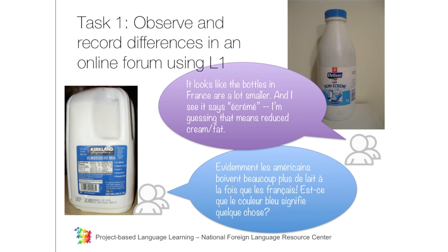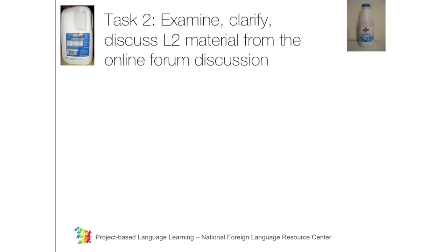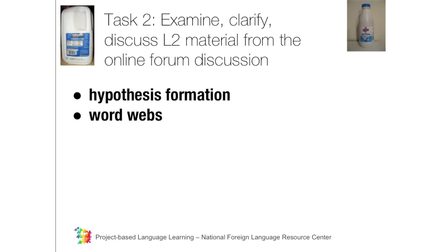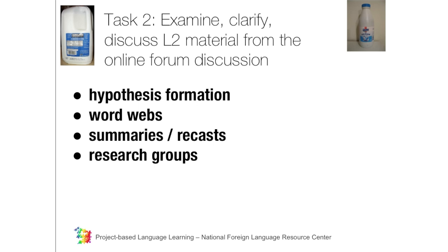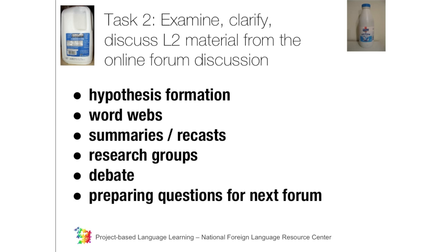The online discussion is an out-of-class activity. When the class meets again, they use as much target language in class as possible to examine, clarify, and discuss what they've seen in the online postings from both sides. The result is each side gains valuable linguistic input in the target language from the postings online, and then focuses on understanding and processing that input — negotiating the meaning, you might say — during class. Many methods can be used to help students explore and use this language, and then finally they come up with questions that they prepare for the next forum, when they're going to have the next stage of their exchange with their partners.